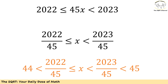To find the range of x, we divide everything by 45. Since 45 is positive, we keep the inequality as is: x is between 2022/45 and 2023/45. Remember the initial condition was that x must be greater than 44 and less than 45. If you check, you'll see that condition still holds, so we have a valid range for x from the positive case.